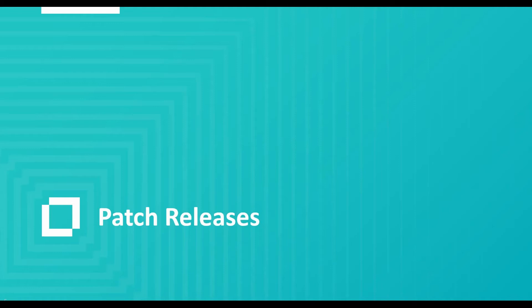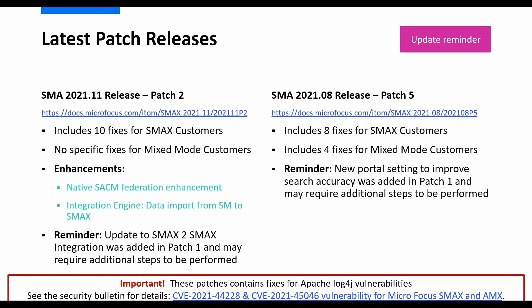First up, patch releases. For SMA 2021.08 release, we are now up to patch five. Within the deck, we've got plenty of links, and we'll make sure we share those offline as well. In that patch, there are eight new fixes for SMAX customers and also four fixes for mixed mode customers. One important thing to note: patches are cumulative, so you don't necessarily need to install patches one, two, three, and four before that. It is mentioned in the patch notes.